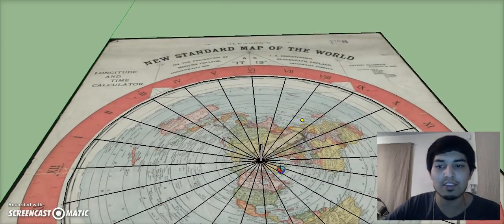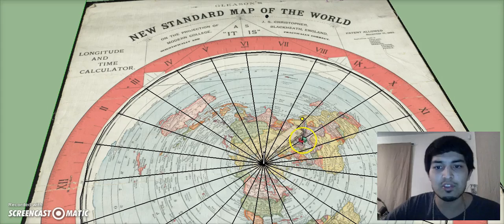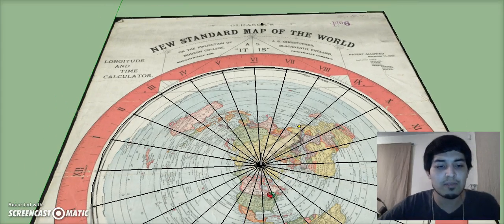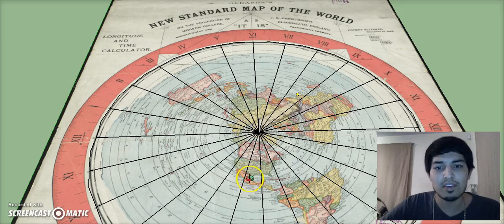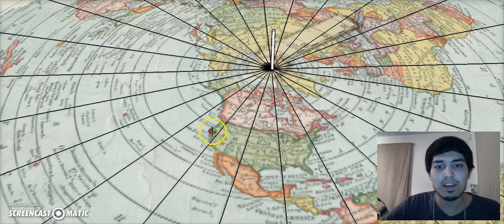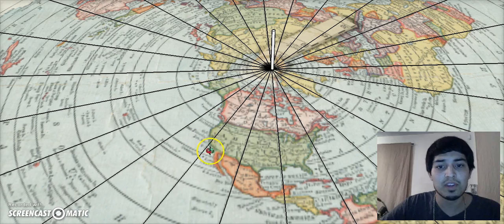And the reason it gets faster and slower is because each one of these represent an hour, a time zone. And so for the United States you would have Pacific Time, Mountain Time, Central Standard Time, which is my time zone.